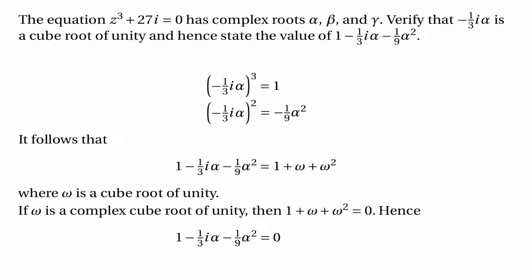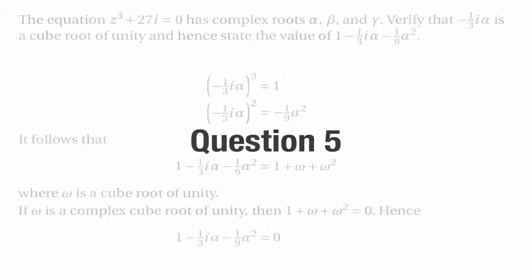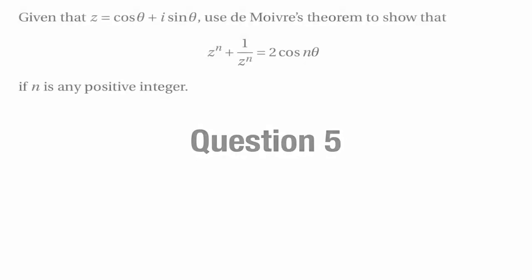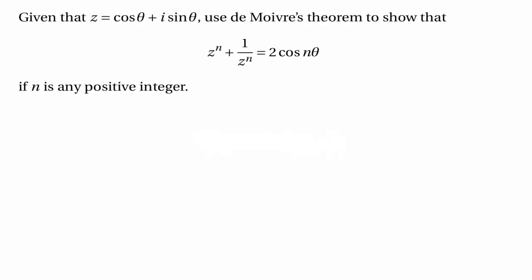That's the end of that question. Let's move on to question 5. This one tells us that z equals cos θ plus i sin θ, and then we have to use De Moivre's theorem to show that z to the power of n plus 1 over z to the power of n is equal to 2 times the cosine of nθ for any positive integer n. This is a really important result that turns up a lot, and you'll need to be able to prove it if asked.